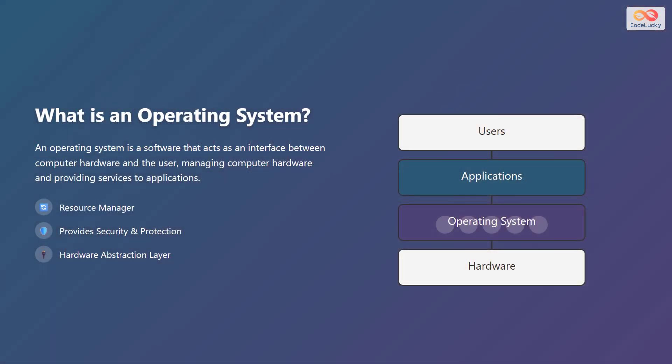An operating system is a crucial piece of software. It acts as an interface between the computer hardware and the user. It manages the computer's hardware resources and provides essential services to applications, allowing them to run smoothly. Key functions of an operating system include resource management, providing security and protection, and offering a hardware abstraction layer.